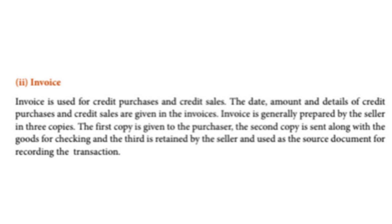For credit purchases and credit sales, the invoice is used. The invoice contains the date, amount, and all details of credit purchases and credit sales. The seller prepares three copies: the first copy is for the purchaser, the second copy accompanies the goods for checking purposes, and the third copy is retained by the seller as a source document record.